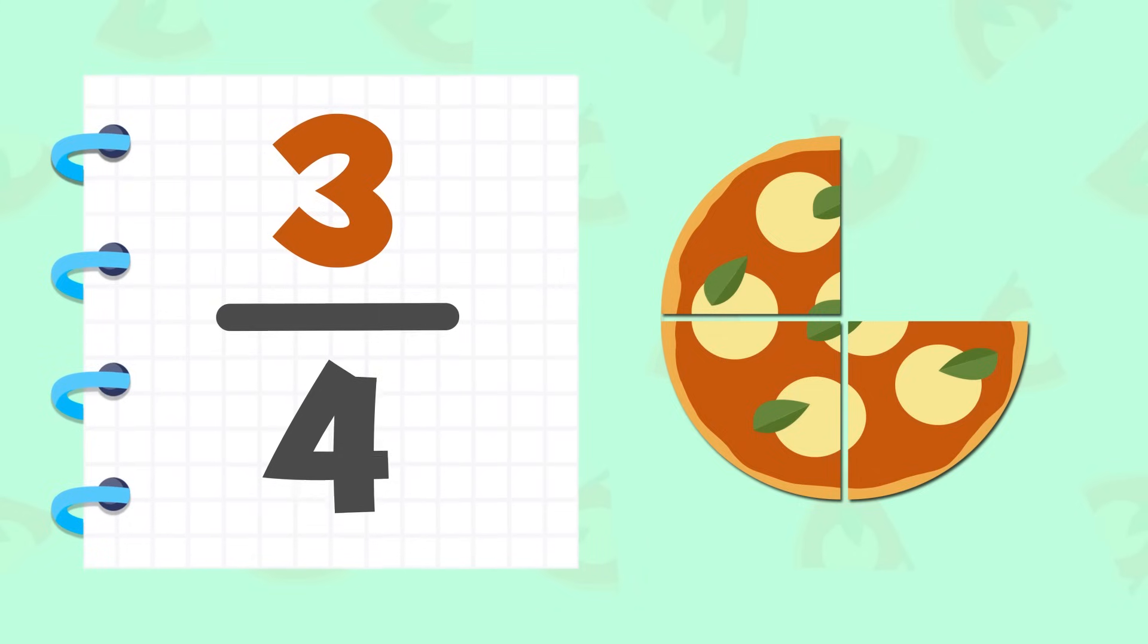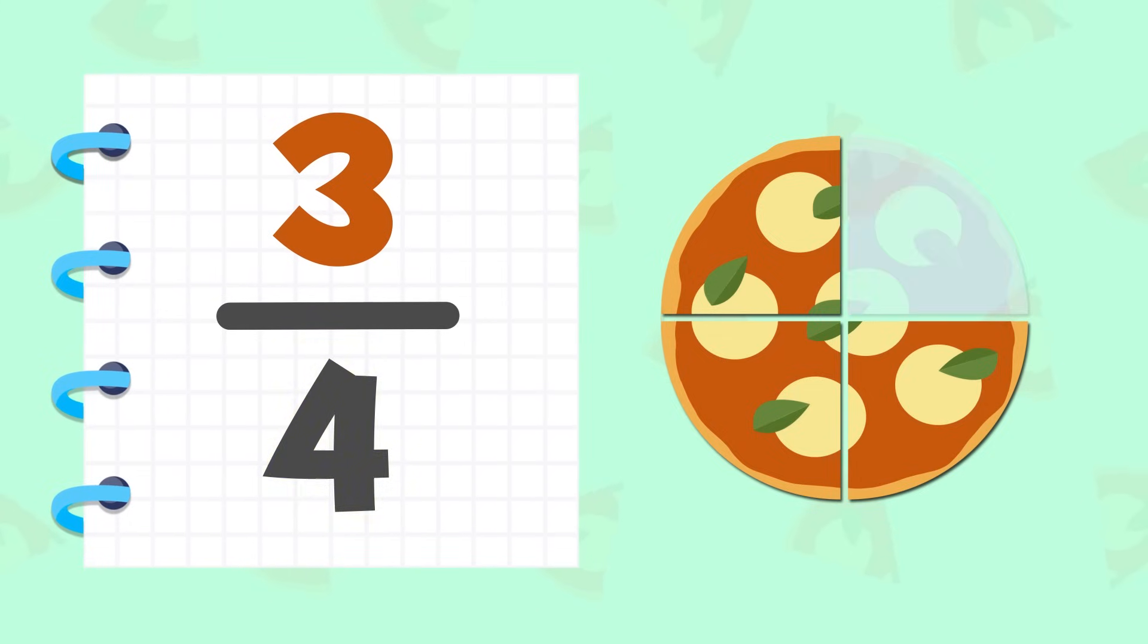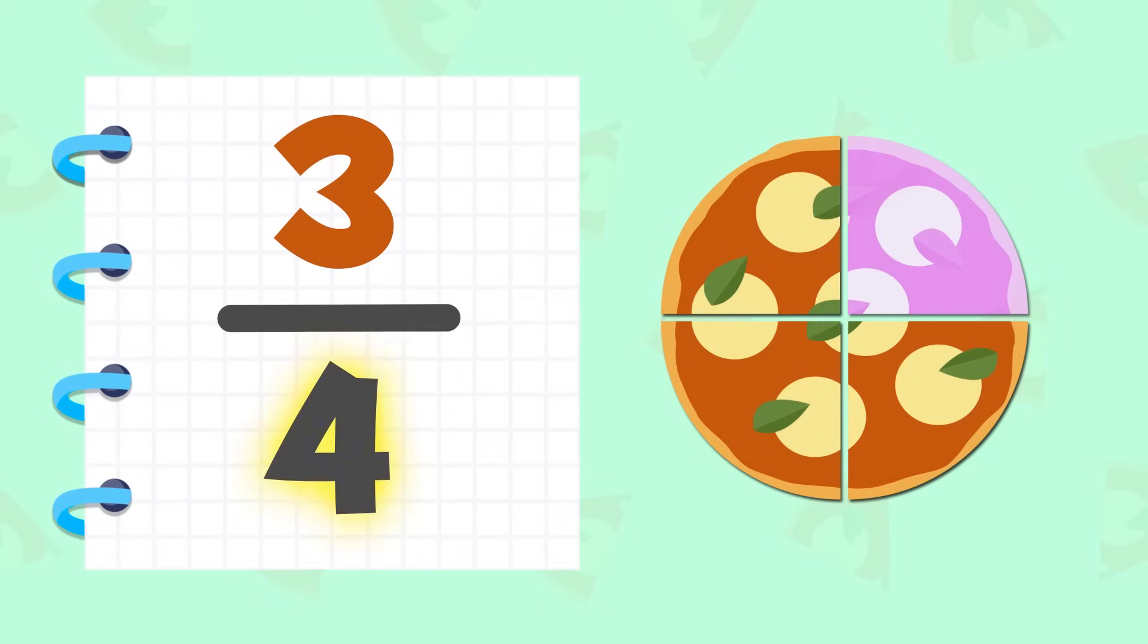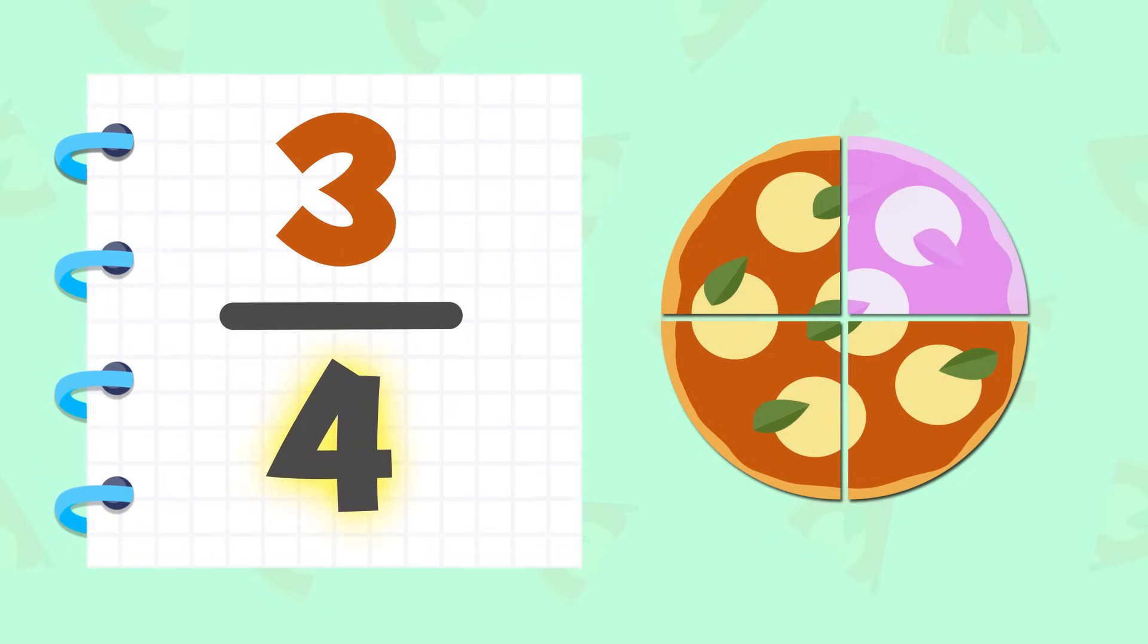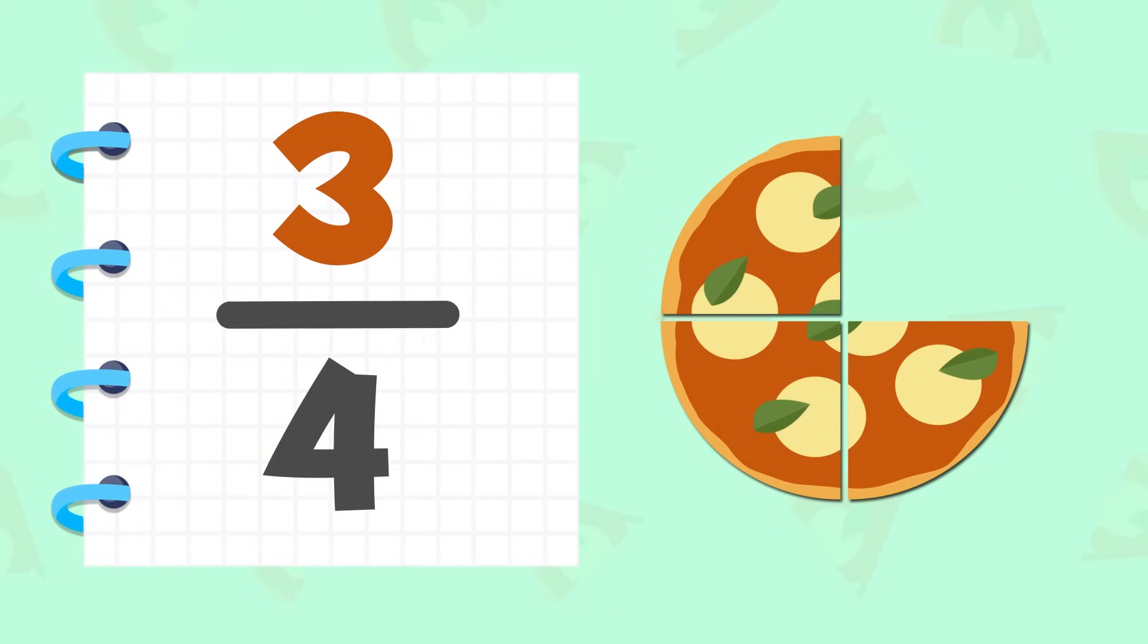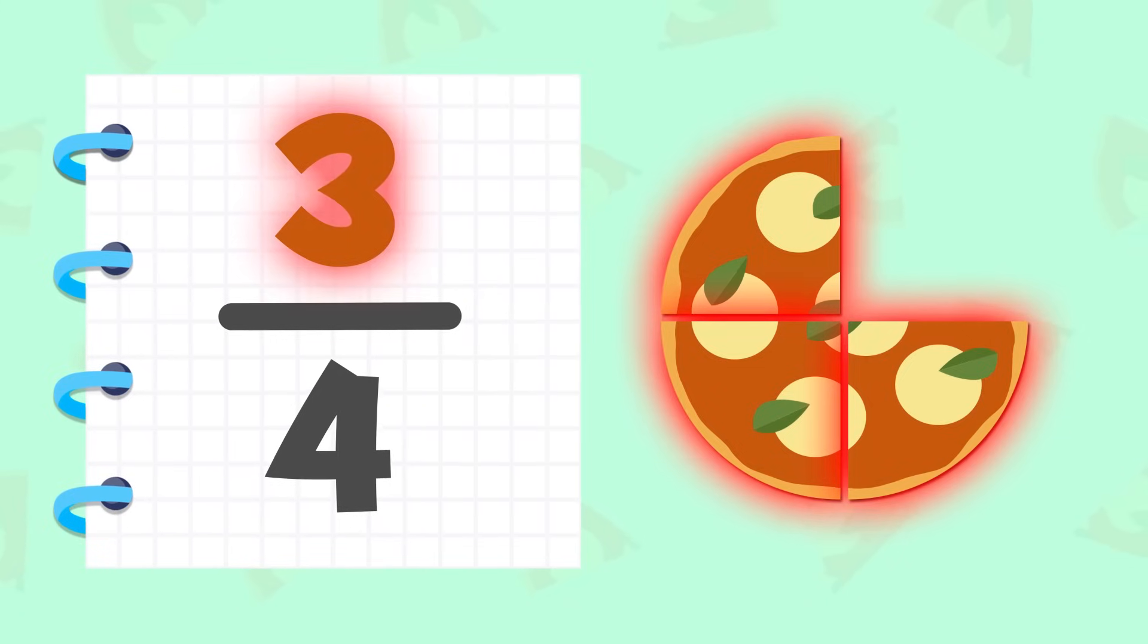The number below the line is the denominator. It indicates into how many equal parts the object is divided. In this case, it's divided in four parts. The numerator is the number above the line. It indicates the number of parts taken away from the whole.